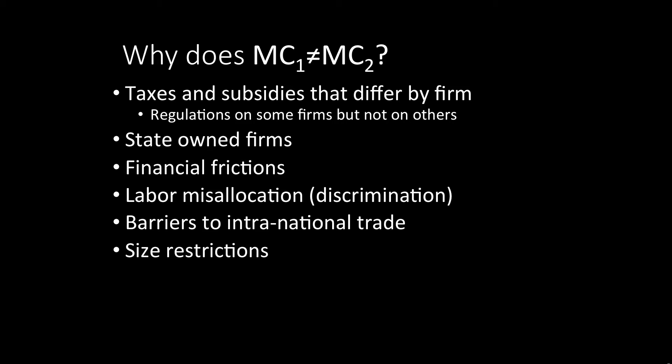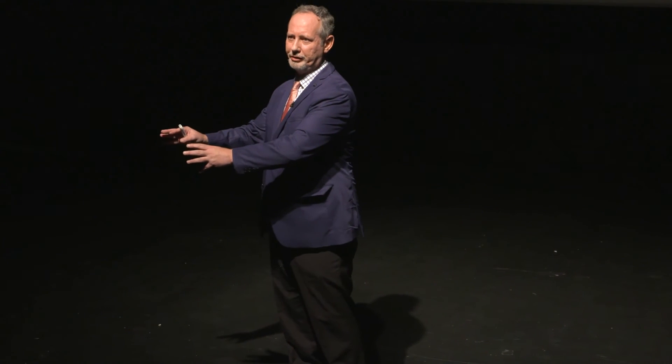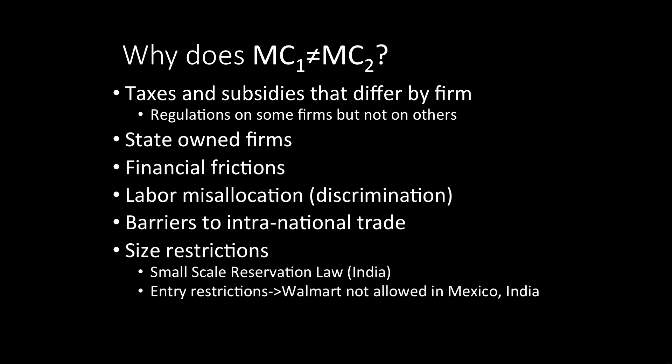Size restrictions are another example. India, for many years, had a reservation law which literally said these hundreds of industries are reserved for small firms — big firms not allowed. And if you think that's crazy, just remember the United States has a Small Business Administration which requires that billions of dollars of government purchases be allocated only to small firms, regardless of price, efficiency, or productivity. Another example is entry restrictions — for example, Walmart wasn't allowed into Mexico, India, or New York.